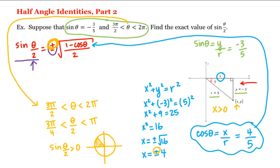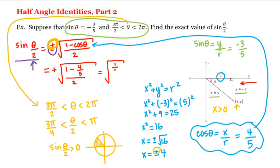So then this is equal to — choosing the positive — the square root of one minus cosine theta, which was four-fifths, all divided by two. That gives us the square root of one minus four-fifths, which is one-fifth, divided by two, which is the square root of one over ten. Rationalizing, we get square root of ten over ten, which is our answer.